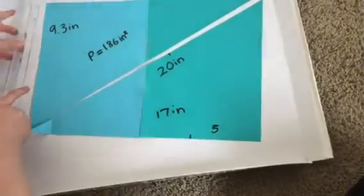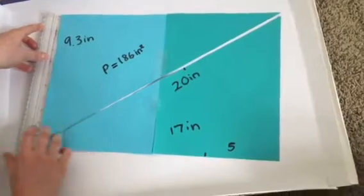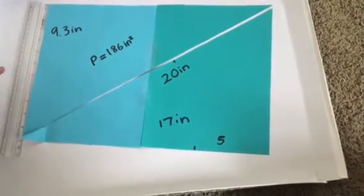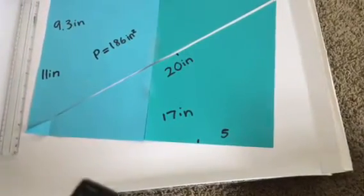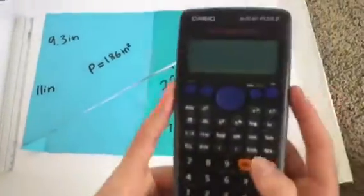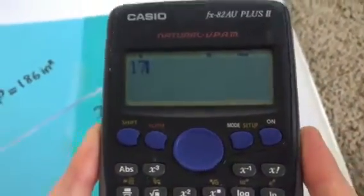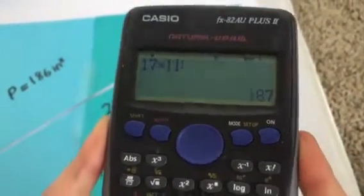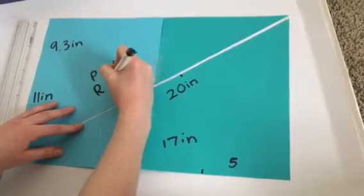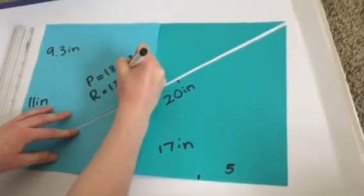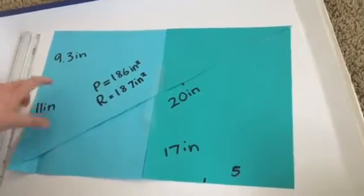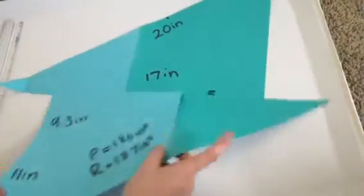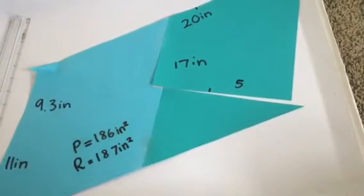We'll just check that. The side is going to be 11 exactly. So, 17 times 11 is 187. So, although there is a slight difference, that proves that a parallelogram is just a rectangle in another form. And that is how you get the area of a parallelogram.